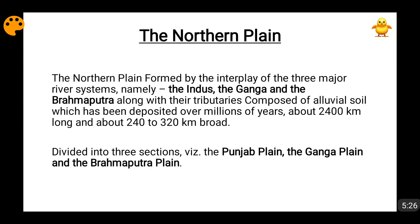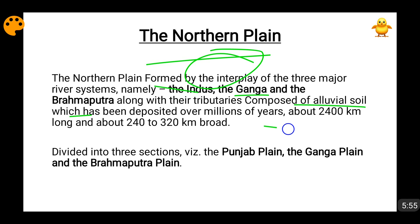Coming on to the northern plains of India: the northern plains come to the south of the Himalayan system and are formed because of the interplay of three major river systems — the Indus, Ganga, and Brahmaputra — along with their tributaries. These northern plains mainly comprise alluvial soil, deposited for millions of years. They are around 2400 km long, with width varying from 240 km to 300 km.